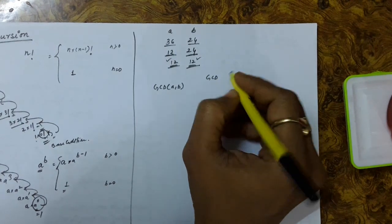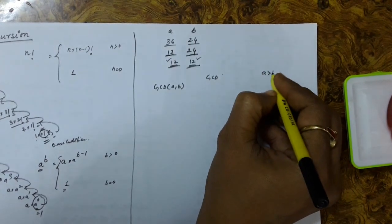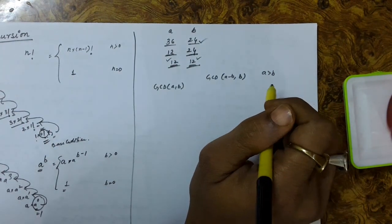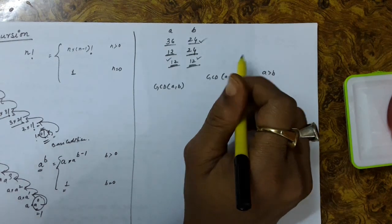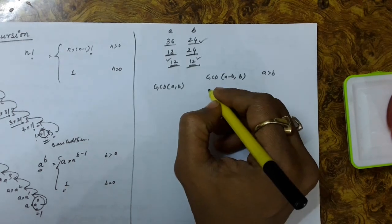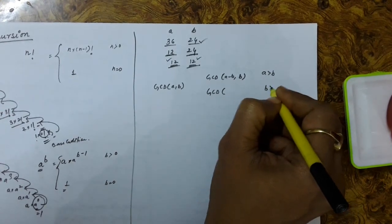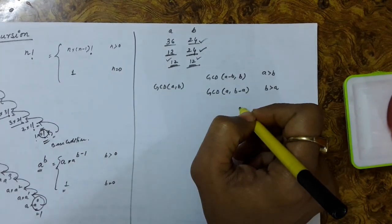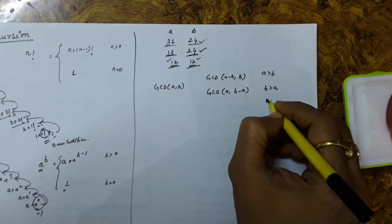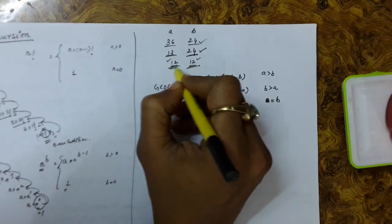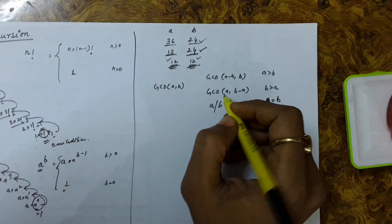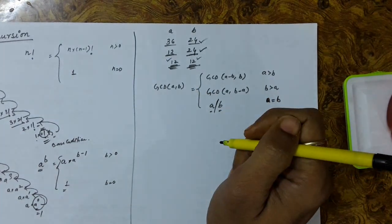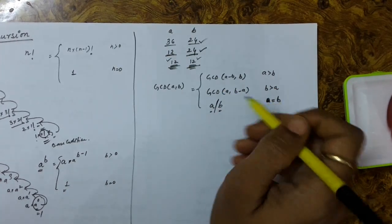So the rule is: GCD(a, b) = GCD(a - b, b) if a > b; GCD(a, b-a) if b > a; and if a == b, then either a or b is the GCD. That equality case is the base condition. The base condition is when a and b become equal.